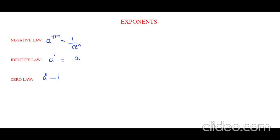So, if we have a negative power in the numerator, it goes to the denominator as positive power. If we have a negative power in the denominator, it goes to the numerator as positive. Let's take an example: 2 to the power of minus 3 can be written as 1 by 2 to the power of 3. So, the negative has become positive.